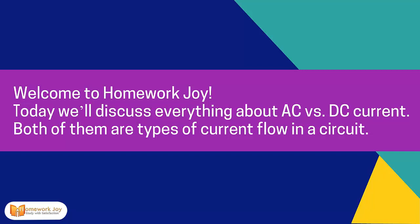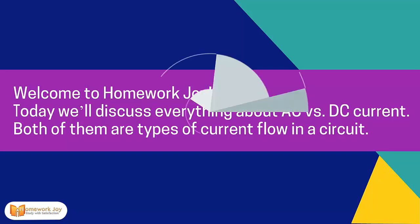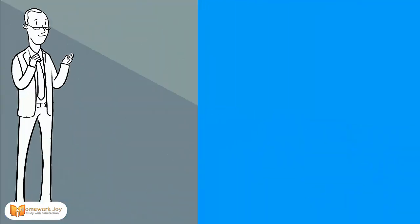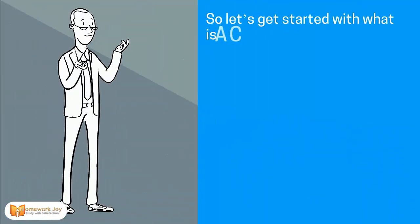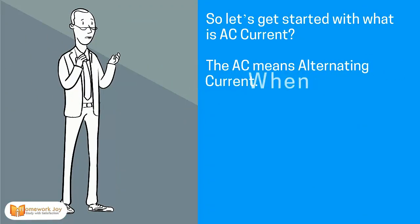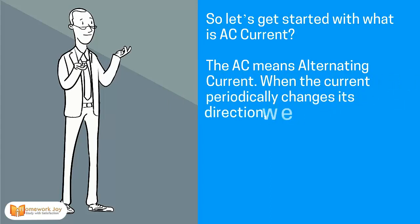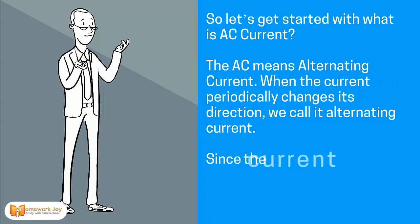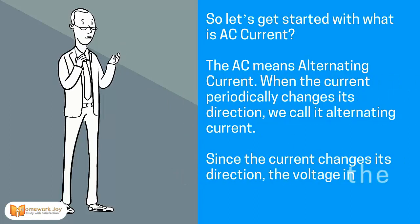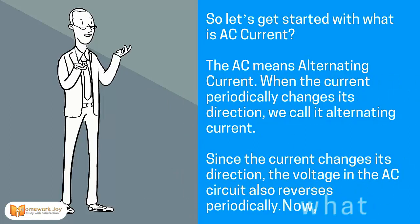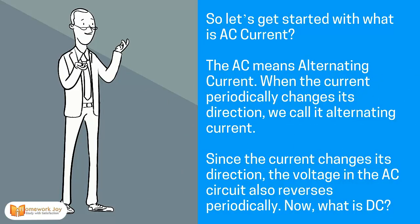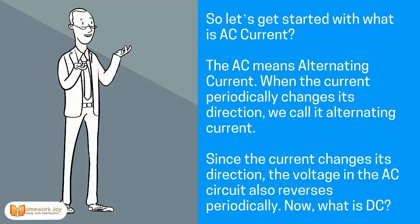Let's get started with what is AC current. AC means alternating current. When the current periodically changes its direction, we call it alternating current. Since the current changes its direction, the voltage in the AC circuit also reverses periodically.